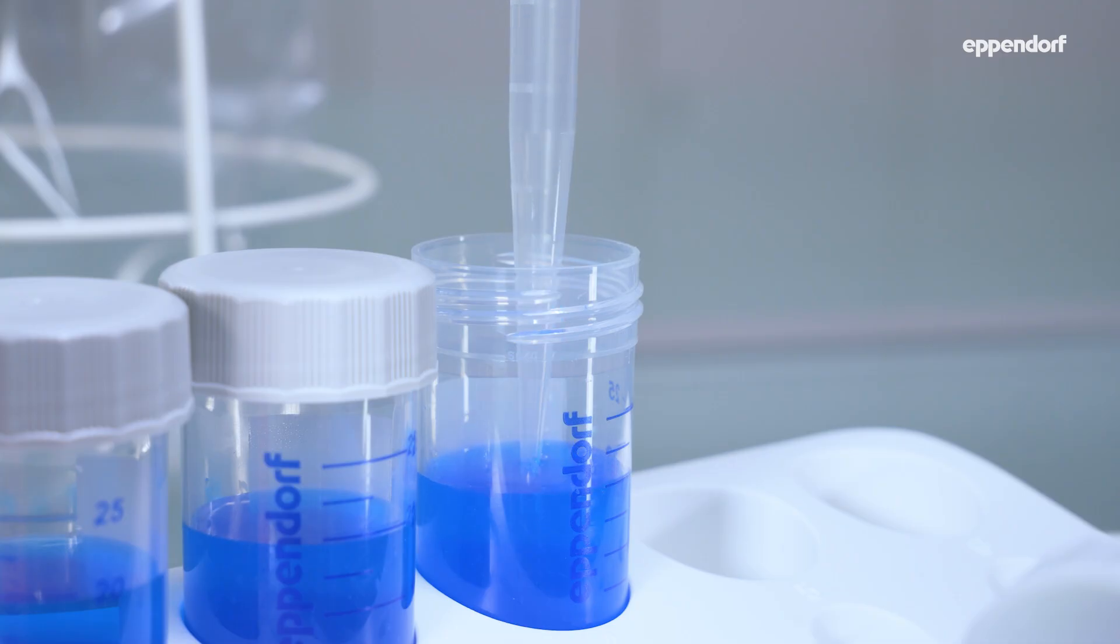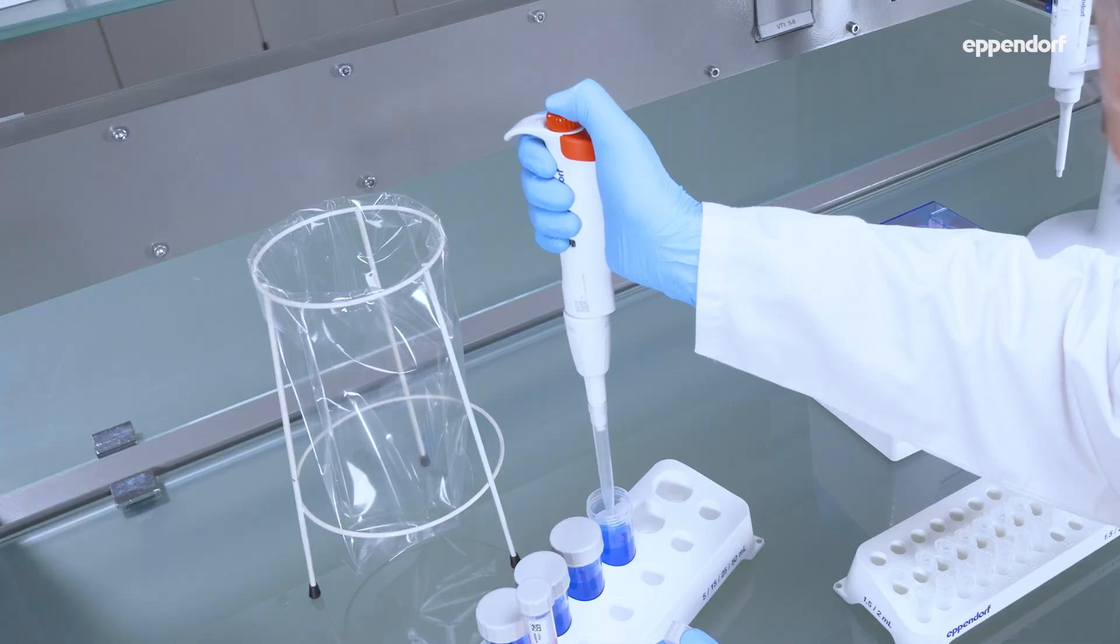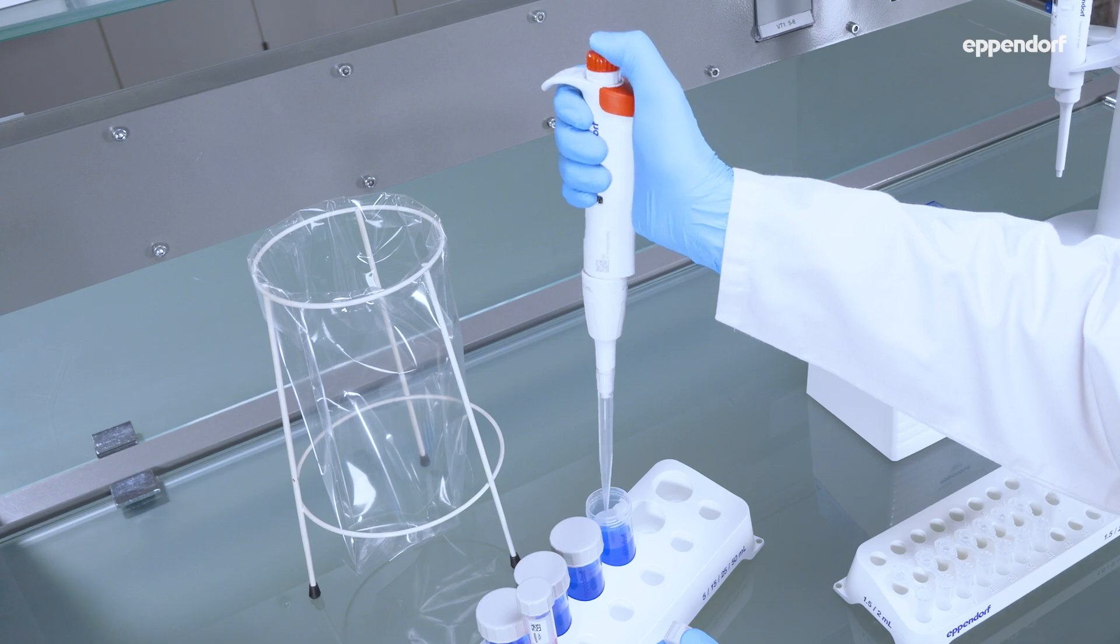Push the control button to the first stop again to dispense the liquid back into the source vessel and pre-wet the inside of the pipette tip. Perform at least three pre-wetting steps to maximize precision when using a new pipette tip.